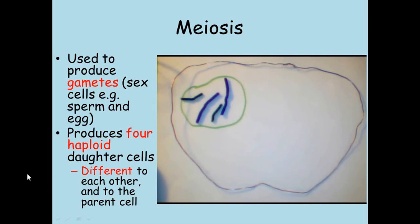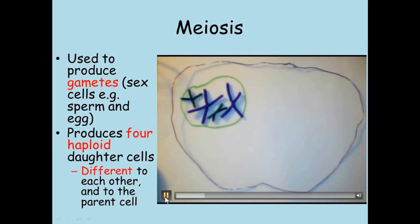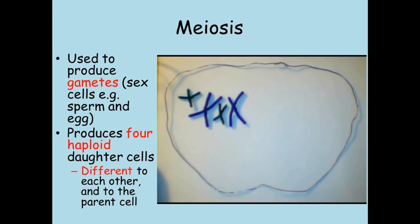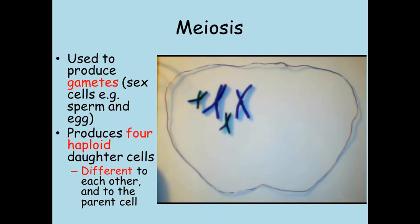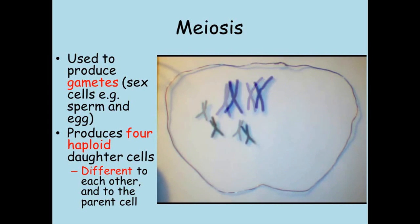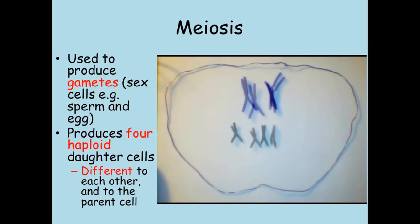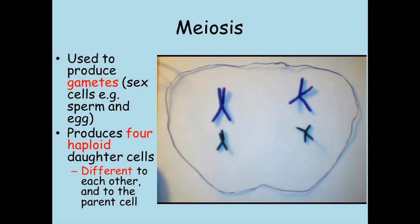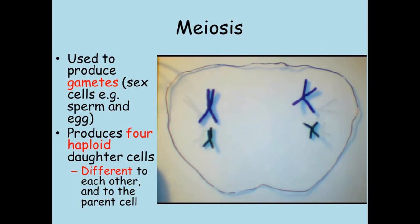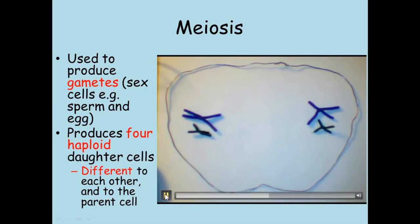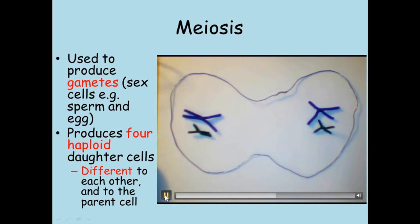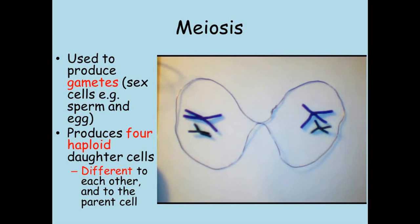Meiosis is how these haploid gametes are produced. To begin with, the chromosomes are copied just as they were in mitosis. The chromosomes then line up down the middle of the cell after the nucleus has disappeared, alongside similar copied chromosomes. The chromosomes are pulled to each side of the cell and the cell divides in two by the cell membrane splitting it down the middle.